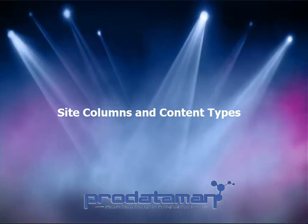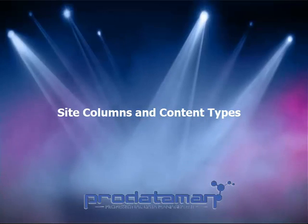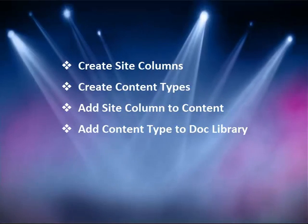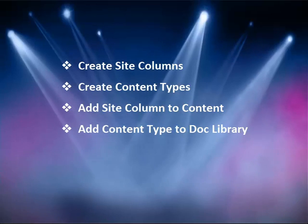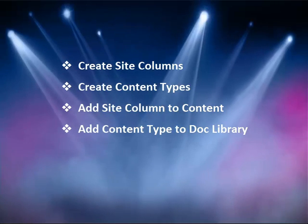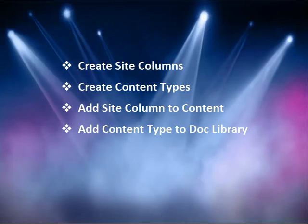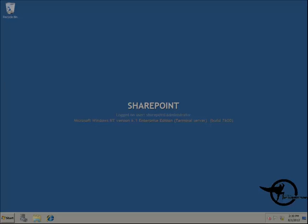In this demo, what I'm going to do is show you how to create a custom list, and then a lookup column that will store as a site column, and then use that site column over and over again to display values from that lookup list without having to reconfigure it — adding it to the content type and making it easy to deploy. We'll do all of that in the browser.